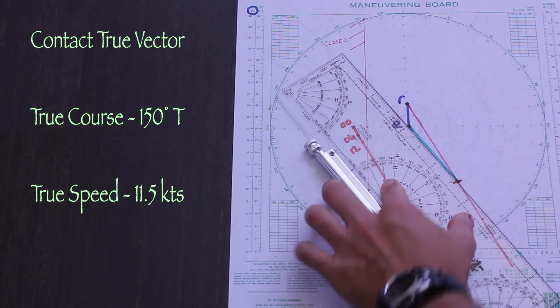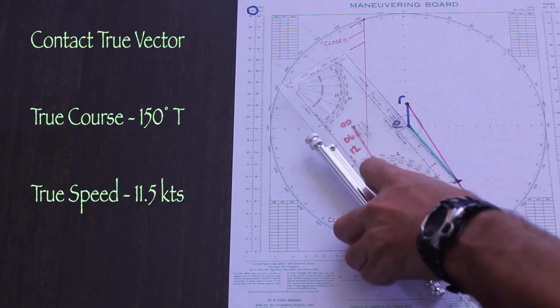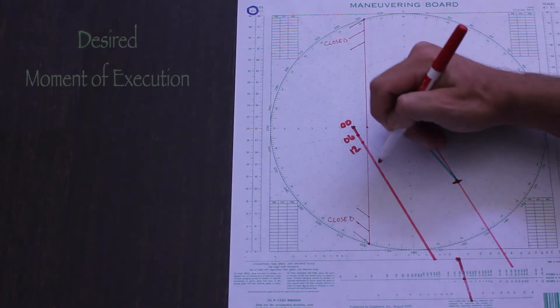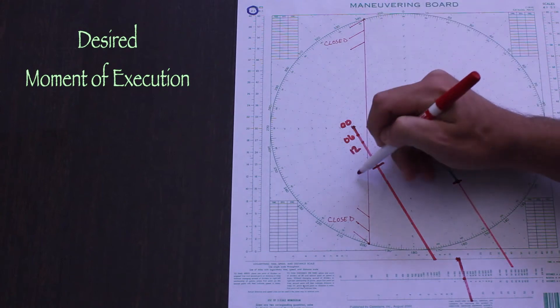In this case, we want to execute our maneuver after the contact has left the closed area. So let's set our moment of execution, or Mx, to this point along the relative motion line.